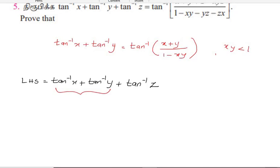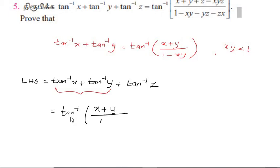If we take the first two terms and add tan inverse of x and tan inverse of y, we get tan inverse of x plus y by 1 minus xy. That is the formula we can use. Then we add tan inverse of 1 minus xy plus tan inverse of z.